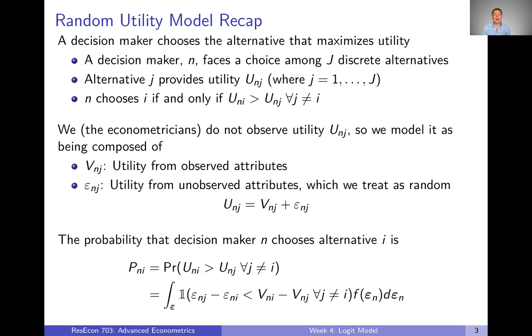So the logit model. Let's start by just recapping the random utility model from last week. The setup of the random utility model is that we have a decision maker choosing the alternative amongst a set of discrete alternatives, choosing the alternative that maximizes utility. To make that more formal, the decision maker, we'll call them N, faces a choice among capital J discrete alternatives.